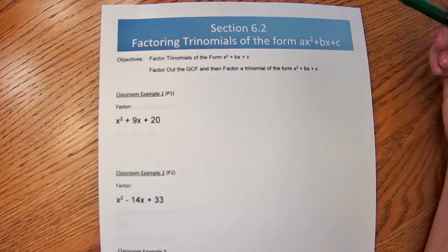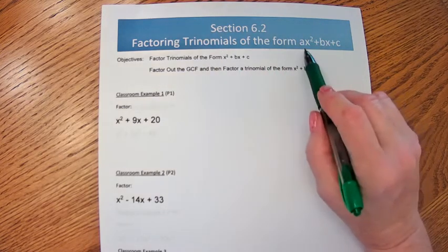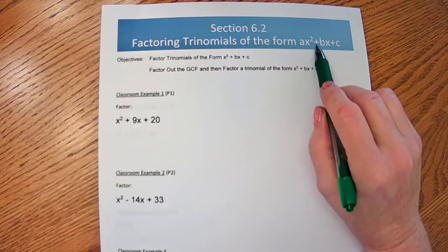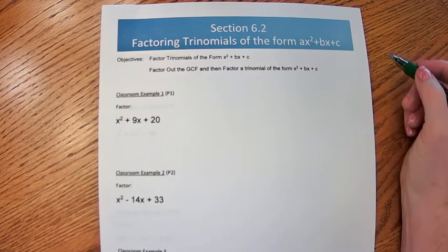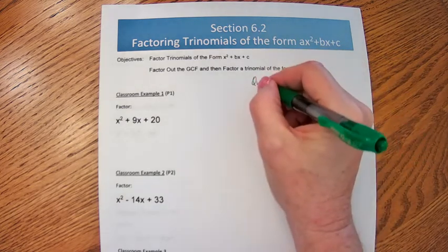So in section 6.2, we'll start factoring a trinomial, which means three terms, for a quadratic, which is a constant times x² plus a constant times x plus a constant. So we're actually talking about factoring quadratics.